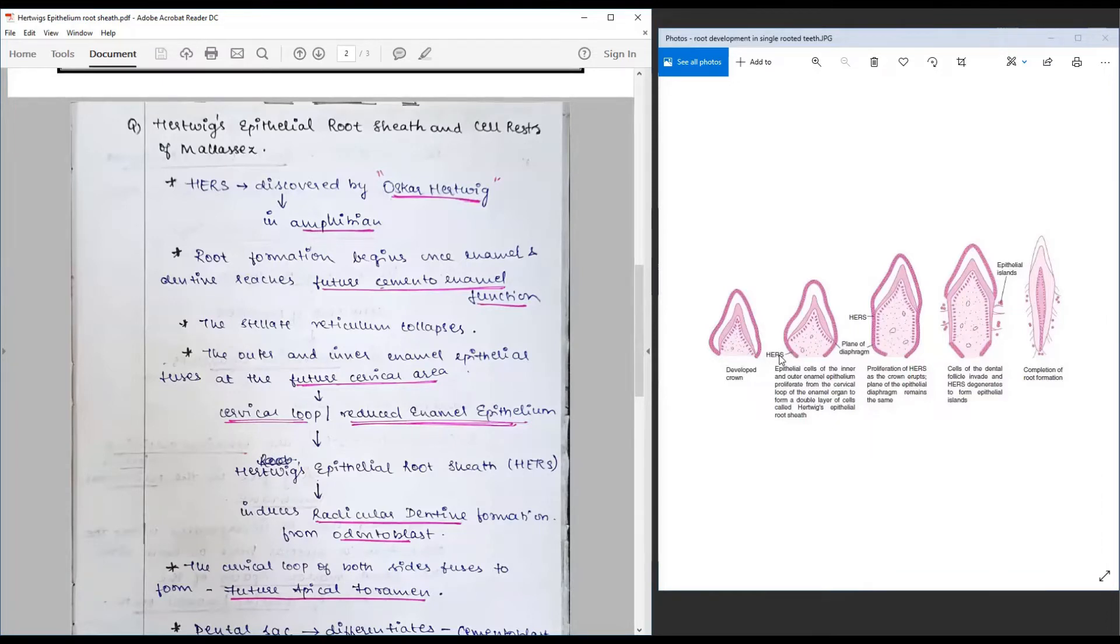This is the cervical loop. This starts to proliferate downwards with a small bend that is called the Hertwig's epithelial root sheath or the epithelial diaphragm, and there is a constriction beginning. This is associated with the integration or the induction of the root dentinogenesis from the newly formed odontoblasts.